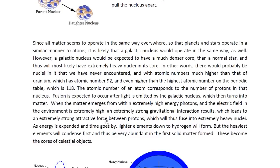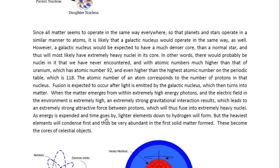Thus, it will most likely have extremely heavy nuclei in its core. In other words, there would probably be nuclei in it that we have never encountered, and with atomic numbers much higher than that of uranium, which has an atomic number of 92, and even higher than the highest atomic number on the periodic table, which is 118. The atomic number of an atom corresponds to the number of protons in that nucleus.